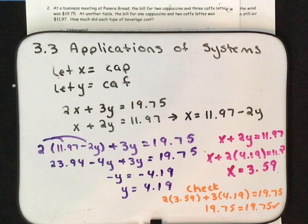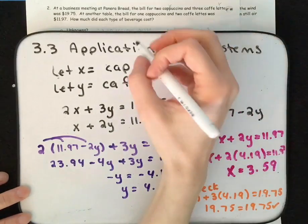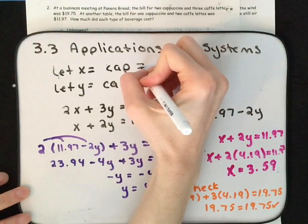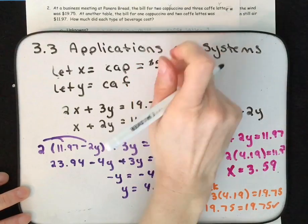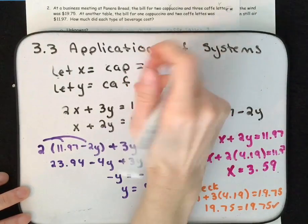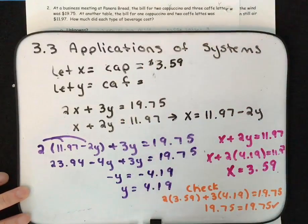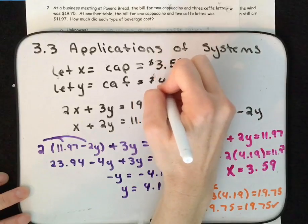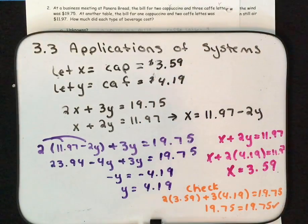It's always important when doing an application to write down your conclusion. X equals $3.59, so a cappuccino costs $3.59. Y equals $4.19, so a cafe latte costs $4.19.